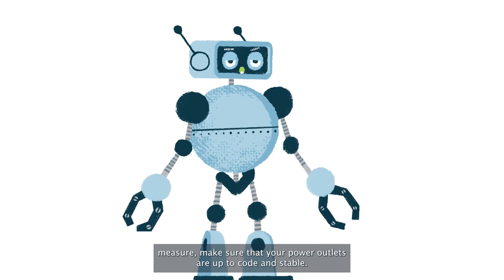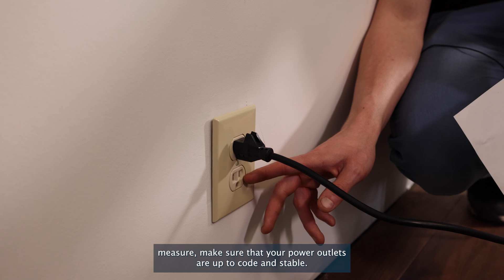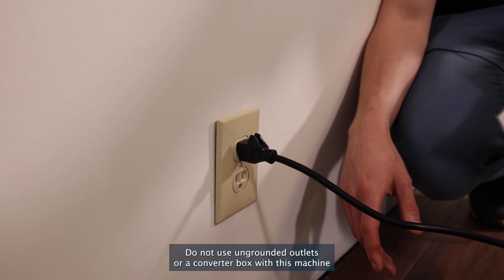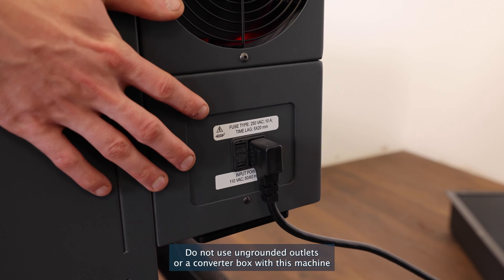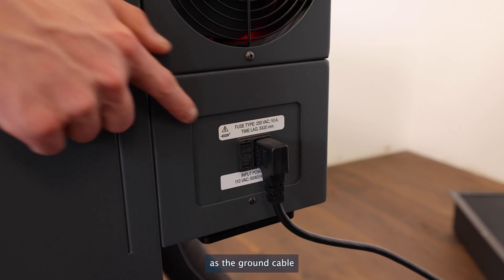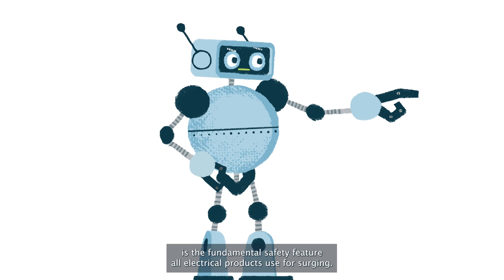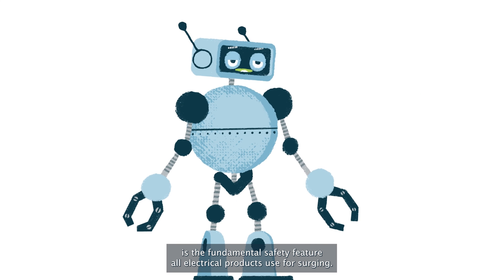As a preventative measure, make sure that your power outlets are up to code and stable. Do not use ungrounded outlets or a converter box with this machine, as the ground cable is the fundamental safety feature all electrical products use for surging.